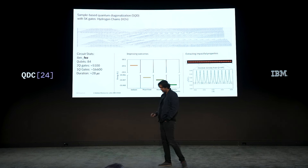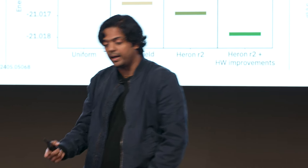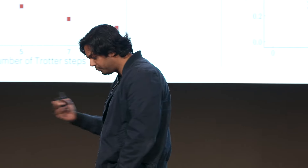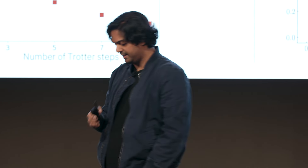We benchmark the performance of these methods by estimating ground state energies for hydrogen chains. We're able to get results that outperform mean field solutions, and with improvements in hardware we're getting closer to classical state-of-the-art results. Realizing quantum advantage requires both high-performance quantum computers and a community of developers creating algorithms. We're excited to see our partners Algorithmic and Kedma also approaching the 5k level, with their methods accessible to users through Qiskit functions.